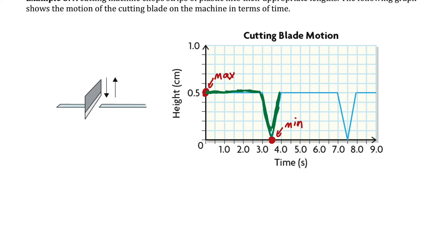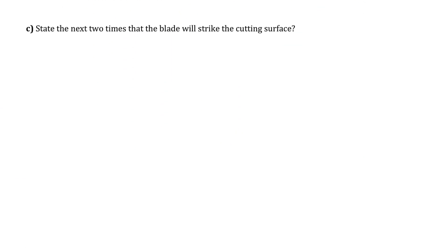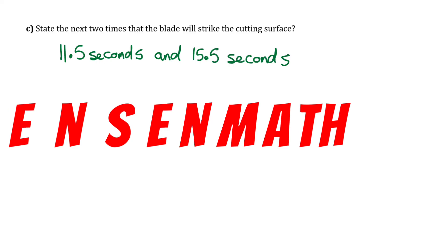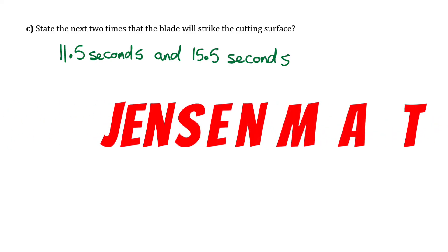Part C asks for the next two times the blade will strike the cutting surface. It strikes at 3.5 seconds and again at 7.5 seconds — four seconds apart, matching the period. Four seconds after 7.5 is 11.5 seconds, and four seconds after that is 15.5 seconds. So the blade next strikes at 11.5 and 15.5 seconds. That concludes our intro to periodic functions lesson.